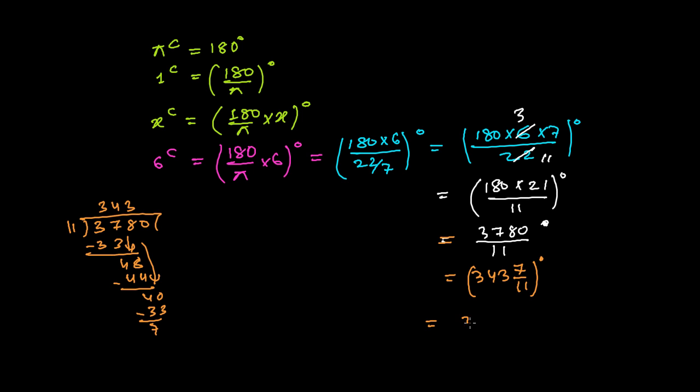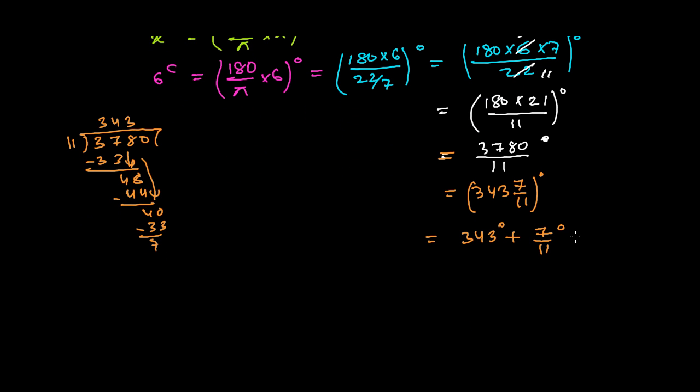So I can write 343 whole number 7 by 11 degrees. I can write this is 343 degrees plus 7 by 11 degrees.